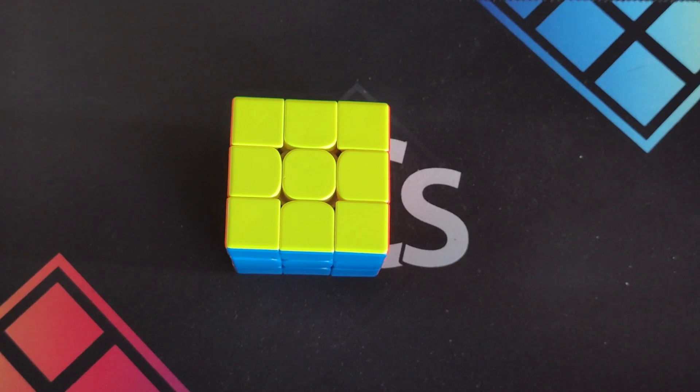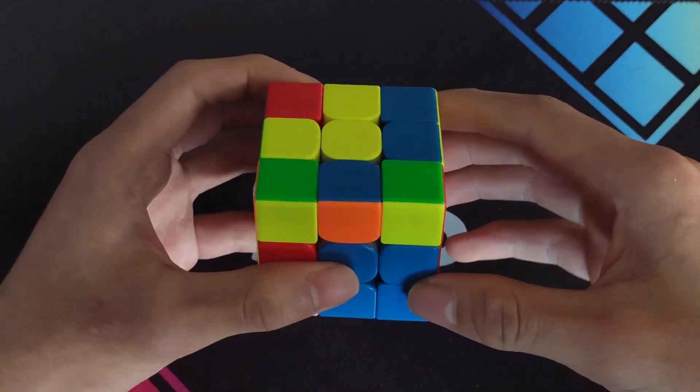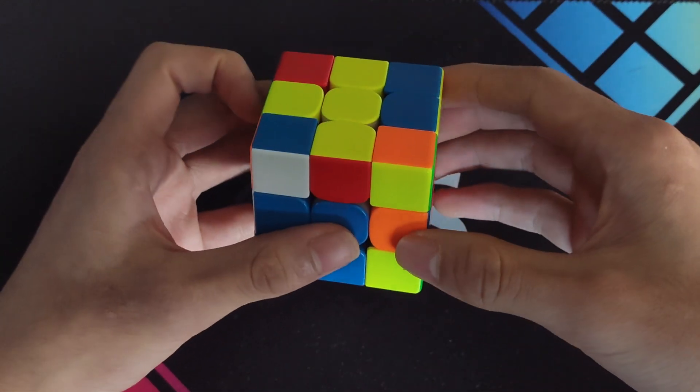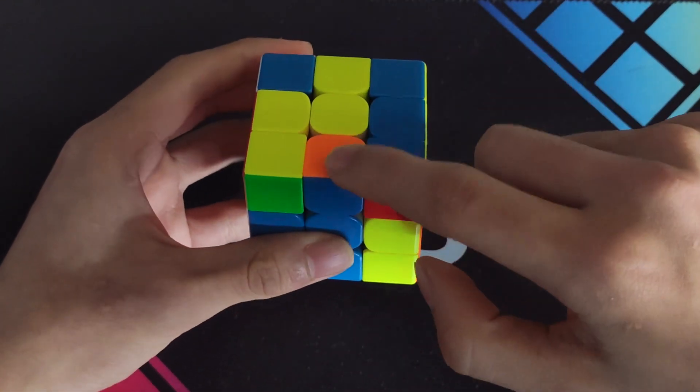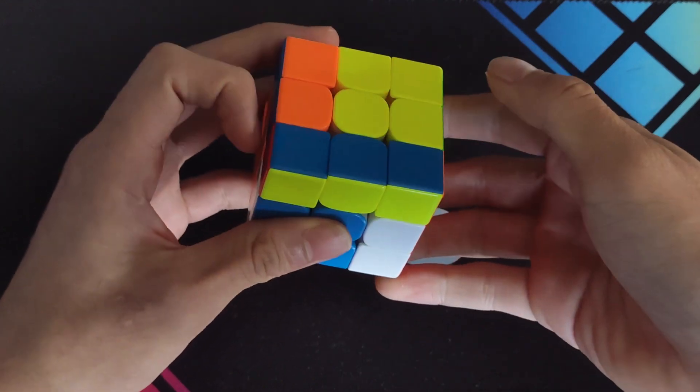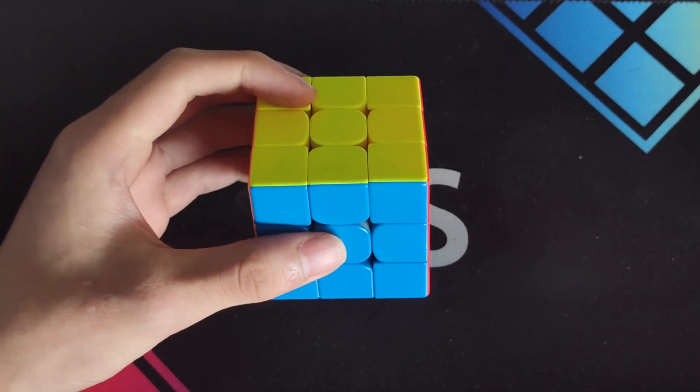F2gen F' can also be used for the final front-left F2L pair, without solving into the back right. One of my favourites is this case, where you can do an F move, R, U', R' to take this edge out, U2, R, U2, R', F'. This case is pretty TPS heavy.